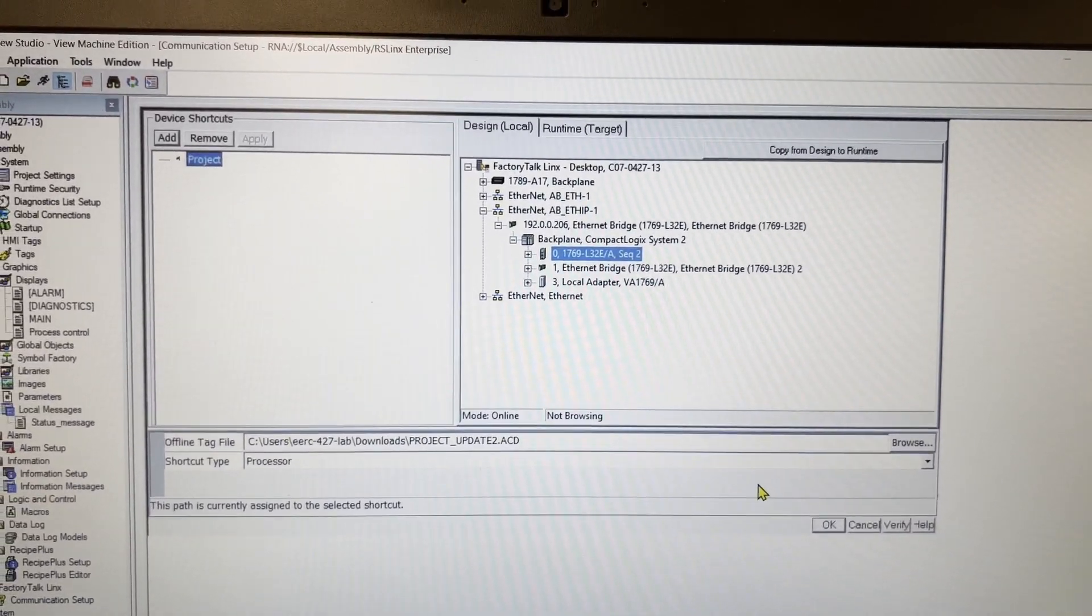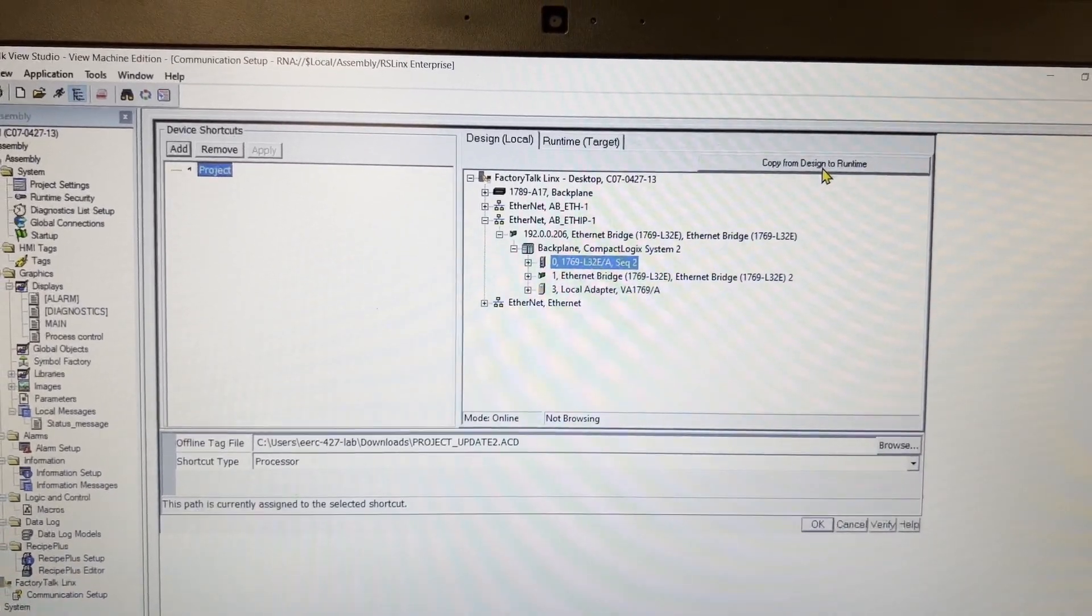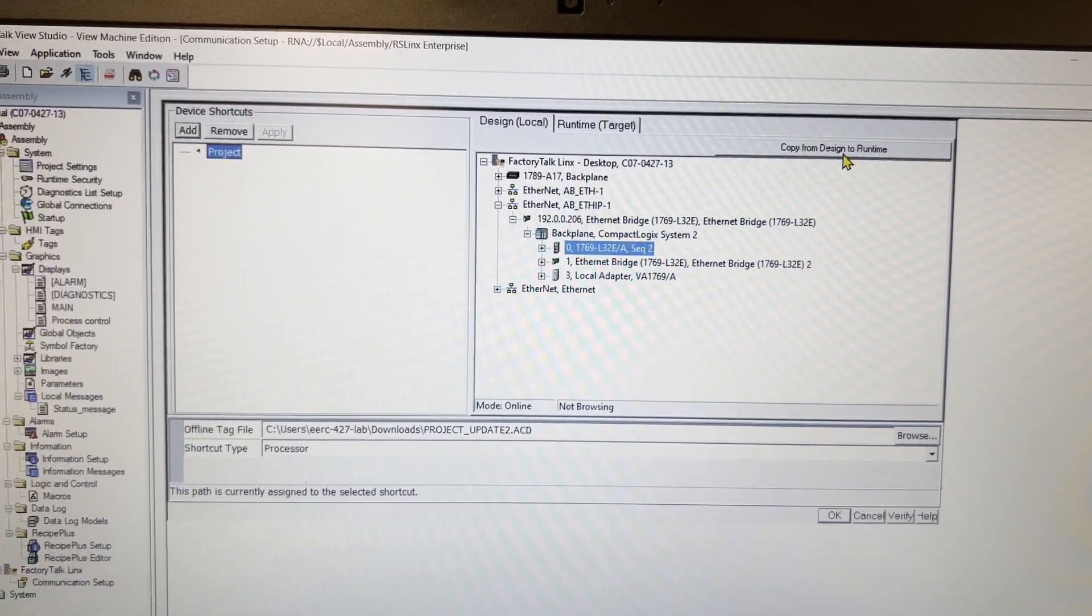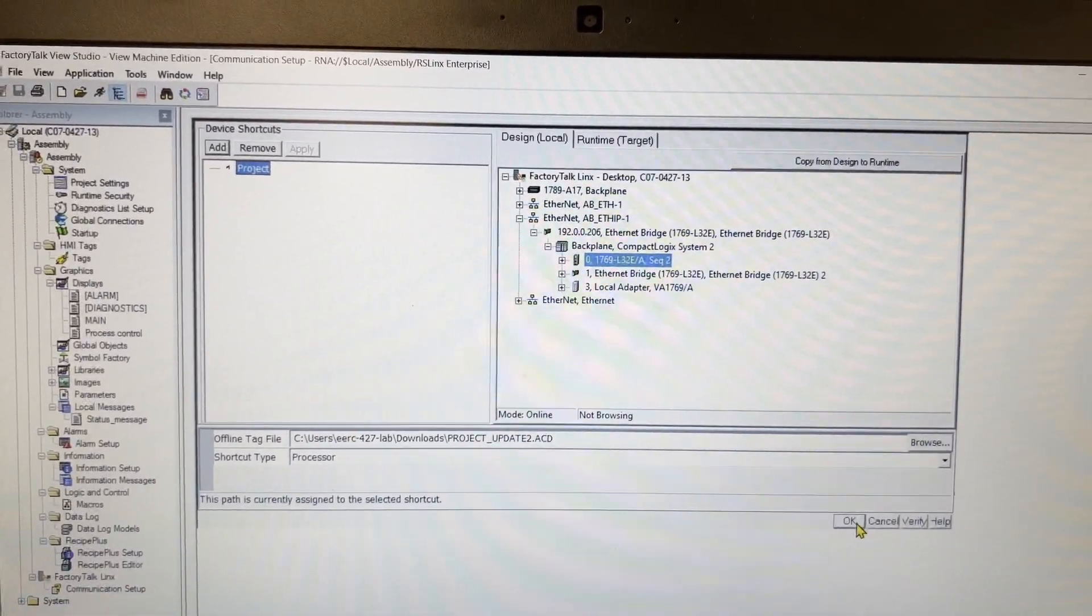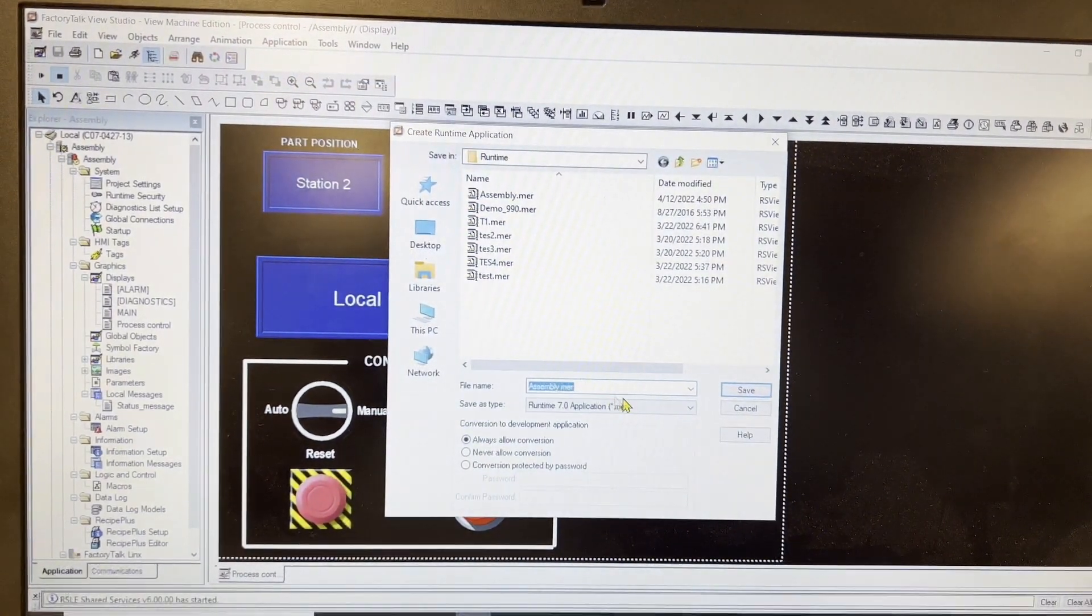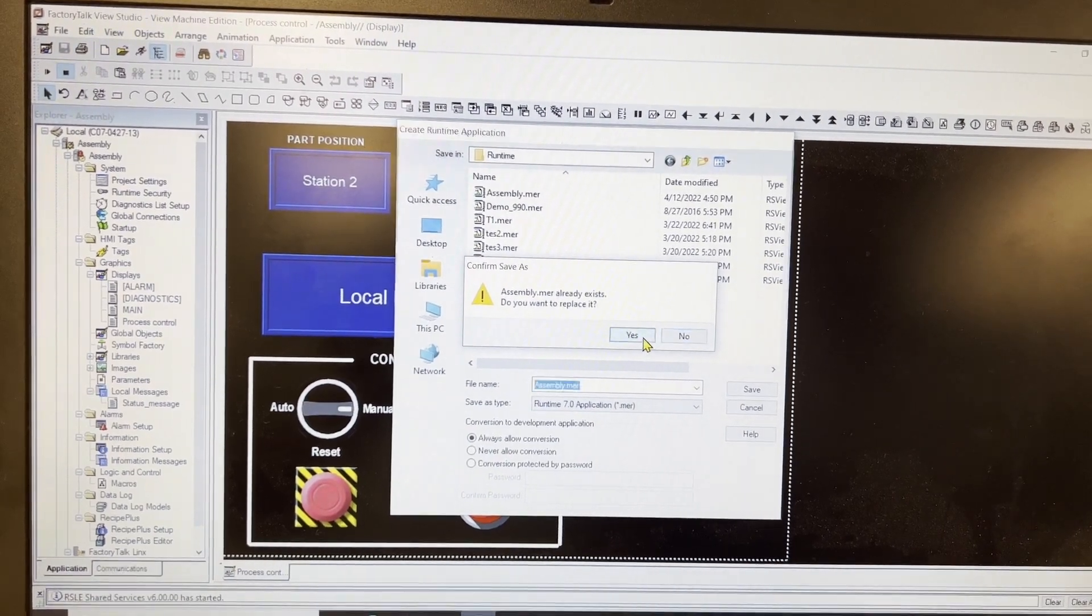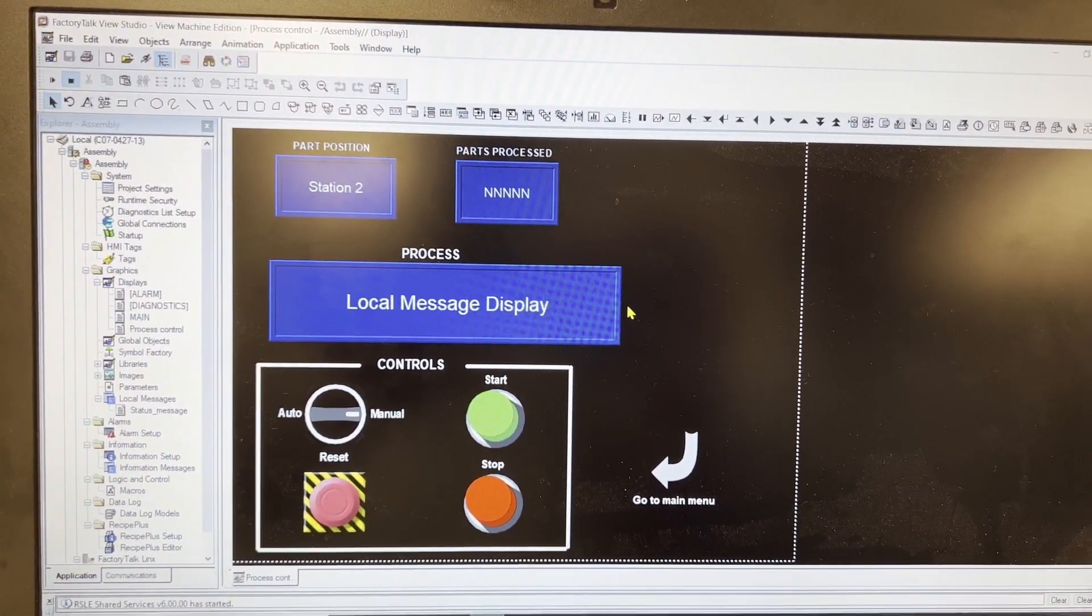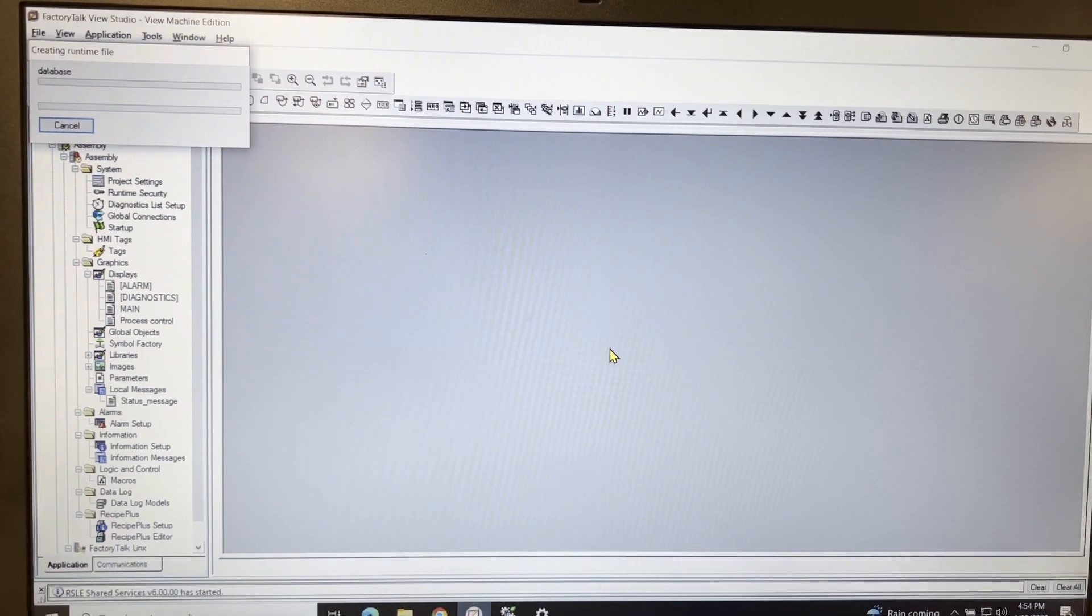And then click Apply. Once this is done, click on Copy from Design to Runtime. And then click OK. Now click Create Runtime Application. Once this is done, the HMI panel is ready for testing.